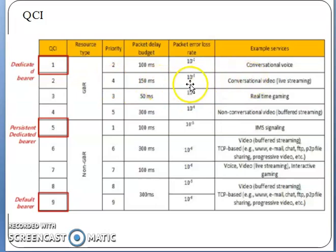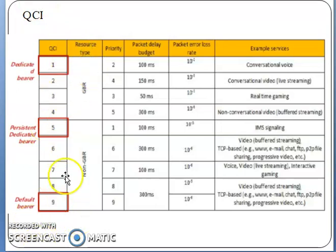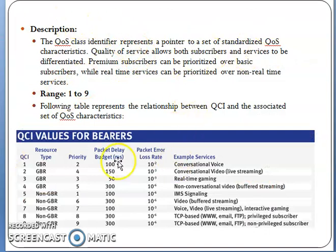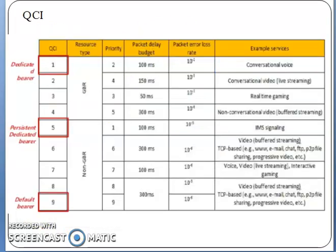QCI 7, 8, and 9 are non-GBR services. QCI 6, 8, and 9 are used for higher-delay-tolerant services like streaming videos from YouTube or Facebook. To summarize QCI: the range is 1 to 9; QCI 1 to 4 are GBR, and QCI 5 to 9 are non-GBR. Priorities to remember: IMS signaling, conventional voice or VoLTE, real-time gaming. All these parameters map through IP domain, packet core domain, and radio domain. Hope you liked this video covering all radio indicators. For queries, visit my LTE Facebook page or YouTube channel and comment or message me. Please subscribe — thank you for your time.